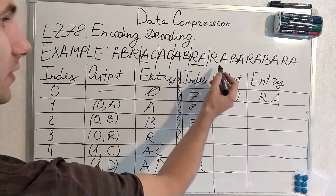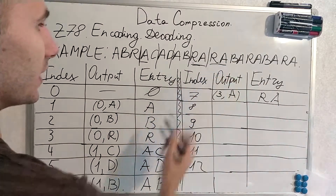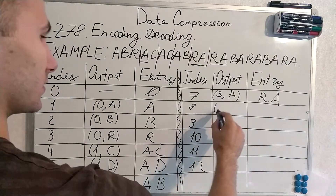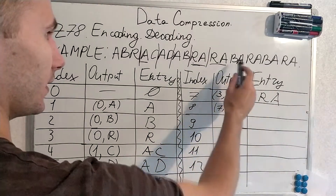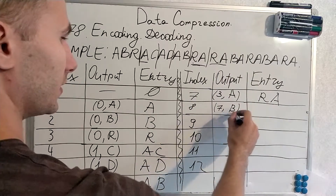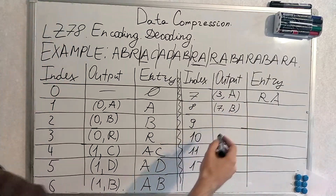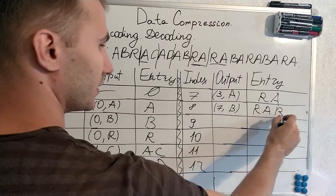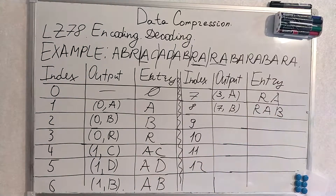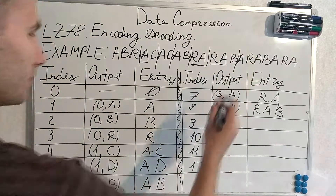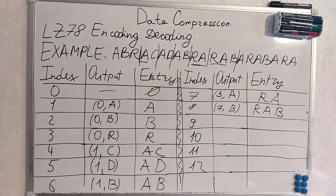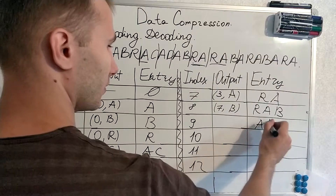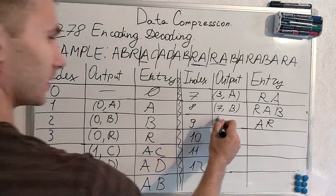We have encoded up to here. The next symbols are 'r' and 'a' — we have this entry at number 7. The next symbol is 'b', thus we encode 'rab' and add it as an entry. We are here now. Do we have 'ar'? No, but now we do: 'a' at index 1, next symbol is 'r'.